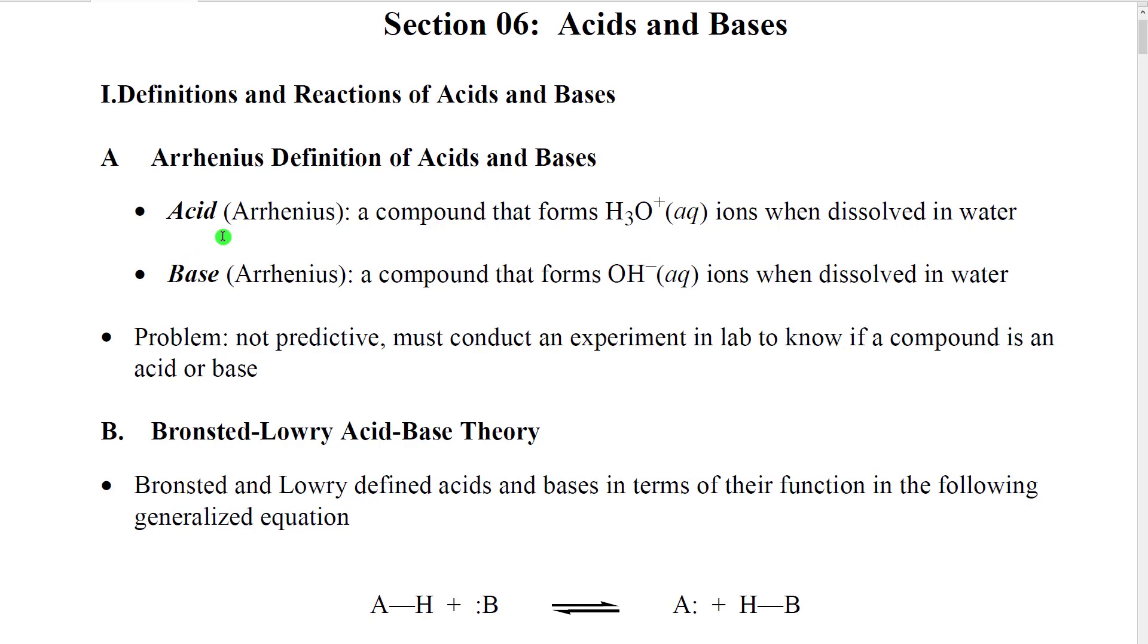Arrhenius defined an acid as a compound that forms hydronium ions H3O+ (aq) ions when dissolved in water. Actually, parenthetically, he initially defined it as a compound that forms hydrogen plus ions or decreases the pH, but in our modern organic chemistry we tend to work with hydronium ions instead of just plain hydrogen plus ions. He defined a base as a substance that formed hydroxide aqueous ions when dissolved in water. These were very practical definitions. They corresponded with what scientists observed when they did chemistry with these substances.